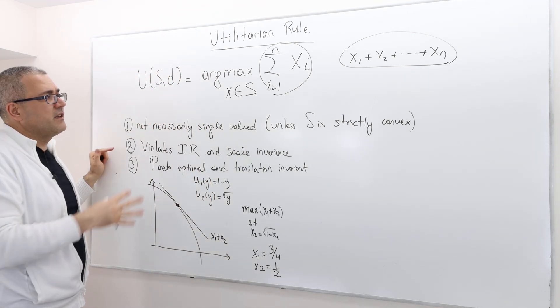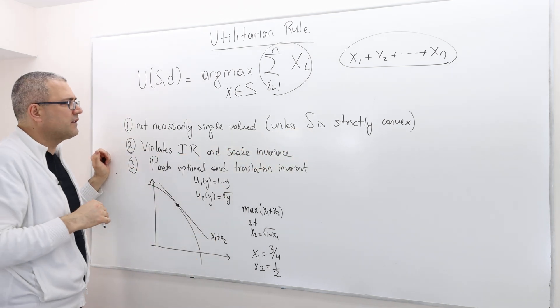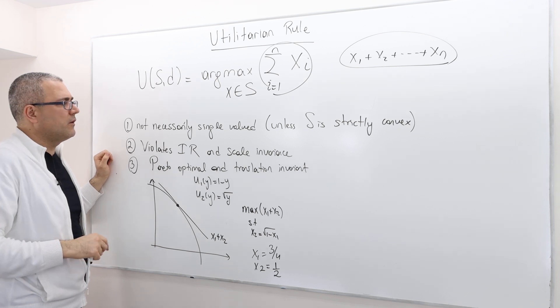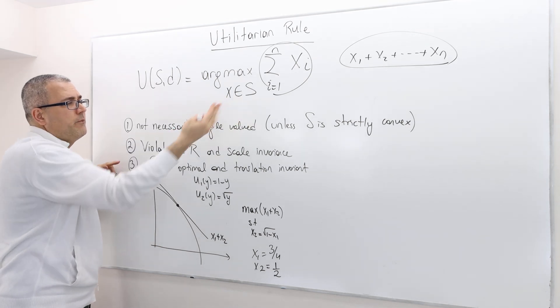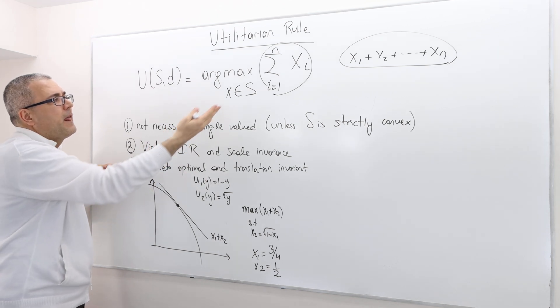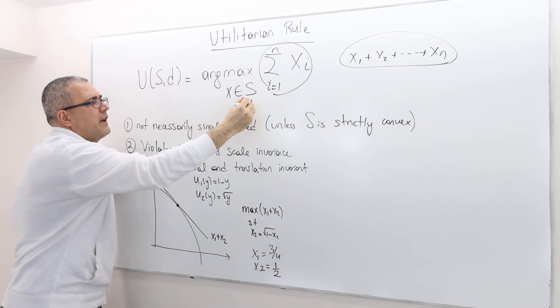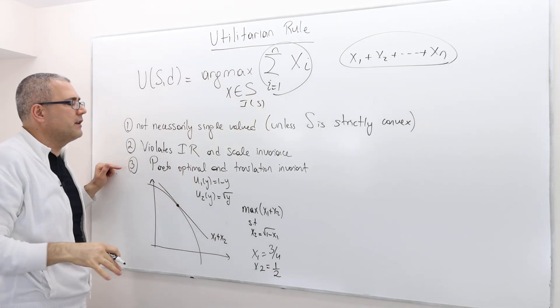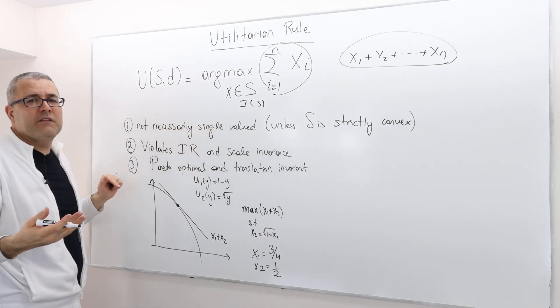This is not necessarily single-valued unless the bargaining problem is strictly convex. I'm going to talk about those examples. It violates individual rationality, obviously, but you can just say that these x's are coming from IS, the individually rational set, rather than S. That's perfectly fine.